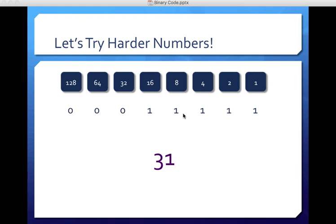So zeros at the start, then one, one, one, one, one is 31. So this is how you count in binary code, very easy.